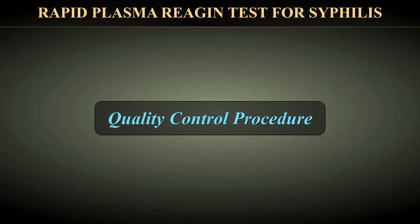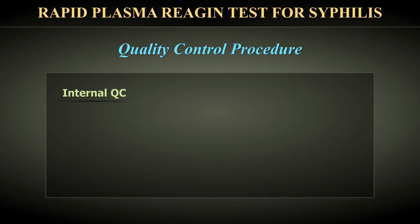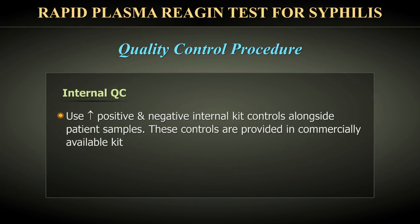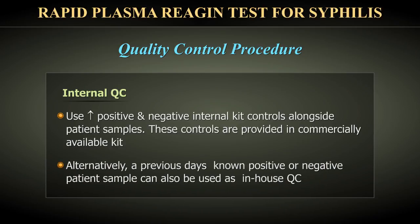Quality Control: Use positive and negative internal kit controls alongside patient samples. These controls are provided in commercially available kits. Alternatively, a previous day's known positive or negative patient sample can also be used as in-house quality control.